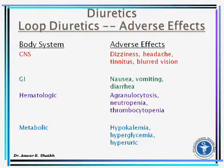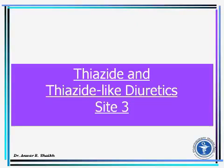Adverse effects of loop diuretics: CNS — dizziness, headache; visual disturbances; GI — nausea, vomiting, diarrhea; hematologic — agranulocytosis, neutropenia; metabolic — hypokalemia and hyperglycemia.